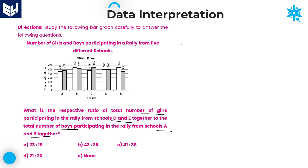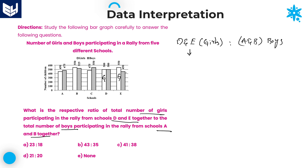We need to calculate the ratio. First, girls from D and E: school D girls = 500, school E girls = 550, giving a total of 1050. Next, boys from schools A and B: school A boys = 475, school B boys = 525, giving a total of 1000.